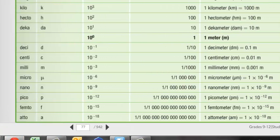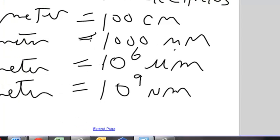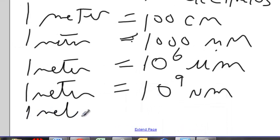And last one I'm going to ask you to know is pico. Pico is 10 to the minus 12. So 1 picometer is 10 to the minus 12 meters. Or conversely, 1 meter is 10 to the 12 picometers.